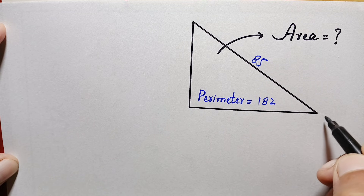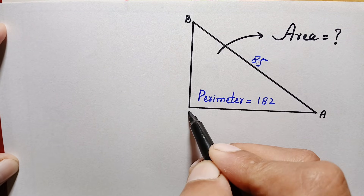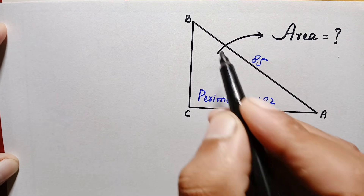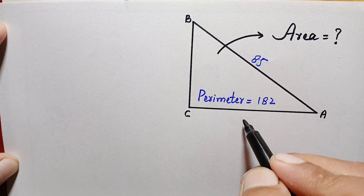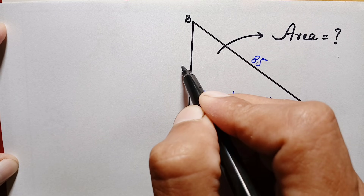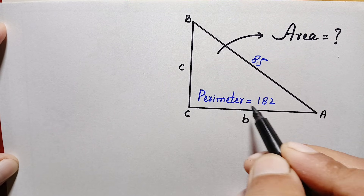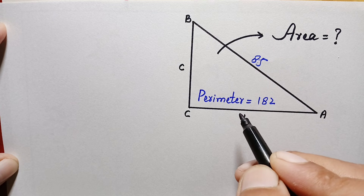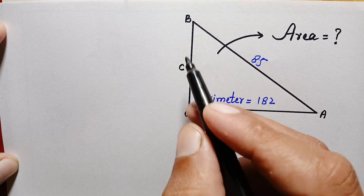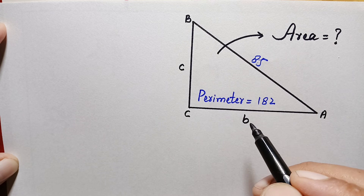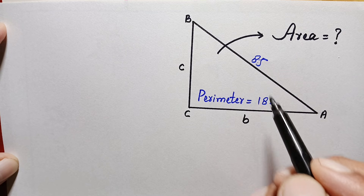First of all, let us suppose this is our triangle ABC — point A, point B, and point C. Let us suppose this side is 'a', this side is 'b', and the hypotenuse is 85. The perimeter of any closed figure is the sum of all its sides, all its boundaries.